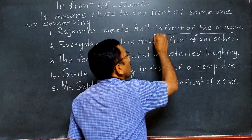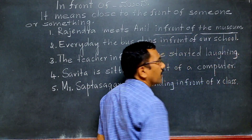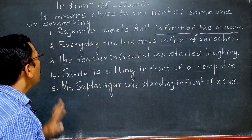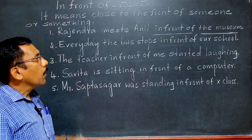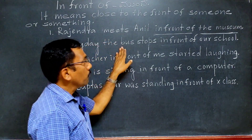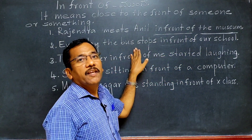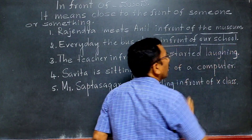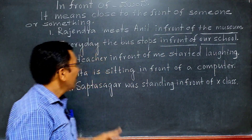Here, 'in front of' is used before a noun — here 'museum' is a noun. Second example: Everyday the bus stops in front of our school. Here 'in front of' is used before a noun.